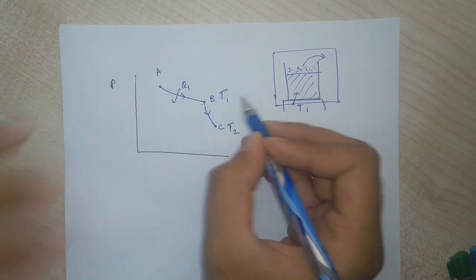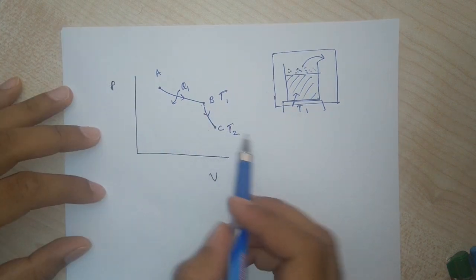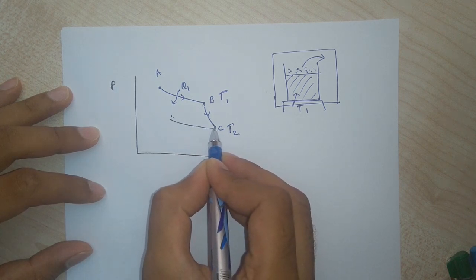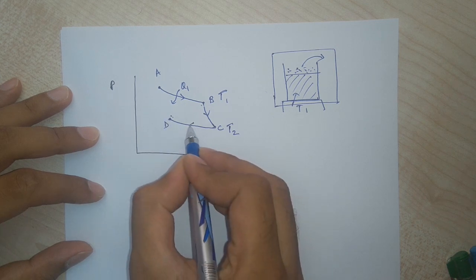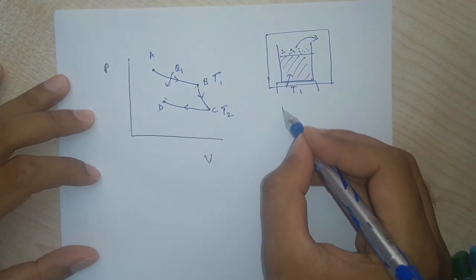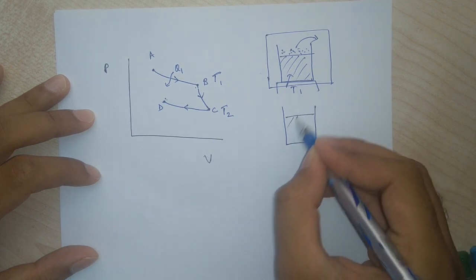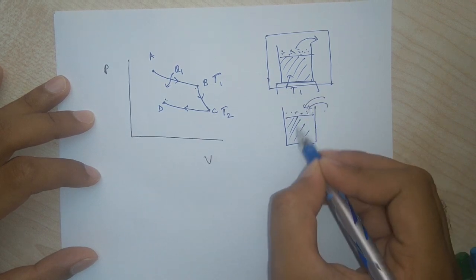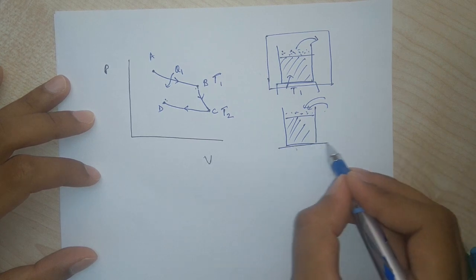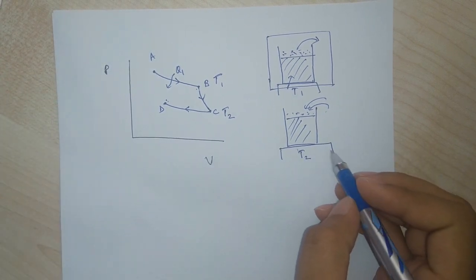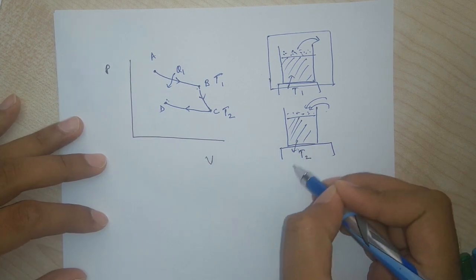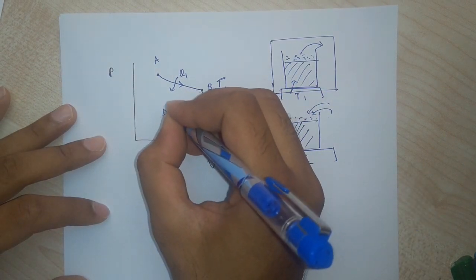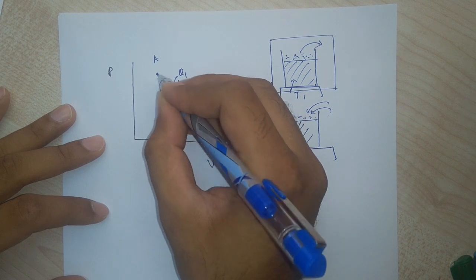After the adiabatic expansion the temperature is T2. Next we isothermally compressed the gas, going from C to point D. We added grains back in, increased the pressure, and decreased the volume. While doing this we kept the system on a reservoir of temperature T2 such that heat was rejected into the reservoir. The heat rejected in this case was Q2.